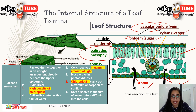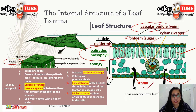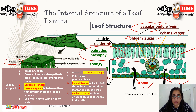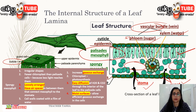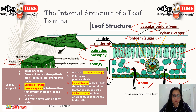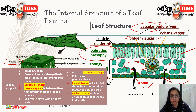The spongy mesophyll cells are irregular in shape, loosely arranged, and have many large air spaces between the cells. These large air spaces facilitate the diffusion of carbon dioxide and oxygen between the cells of the leaf. The spongy mesophyll is located below the palisade mesophyll layer. It still has chloroplasts, but fewer than palisade mesophyll cells, and it also helps carry out photosynthesis by absorbing any light not already absorbed by the palisade mesophyll.